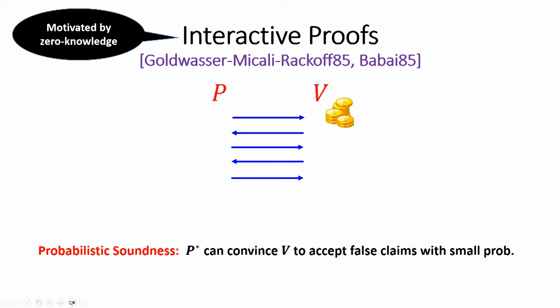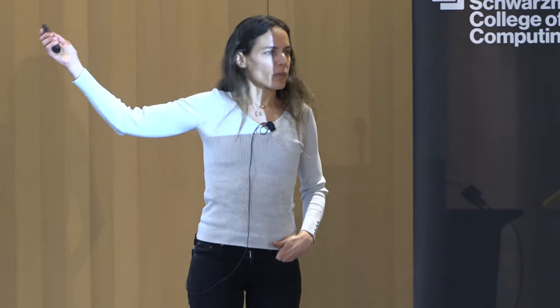The soundness guarantee in interactive proofs is probabilistic — not computational, but against all-powerful adversaries, and probabilistic. If a cheating prover can convince a verifier to accept a false statement, he can do so only with some small probability. We're not so worried about this probability because by repetition we can get it down to exponentially small. If the probability is one-half to begin with and you repeat k times, you get the probability down to 1 over 2 to the k — essentially zero for practical purposes.